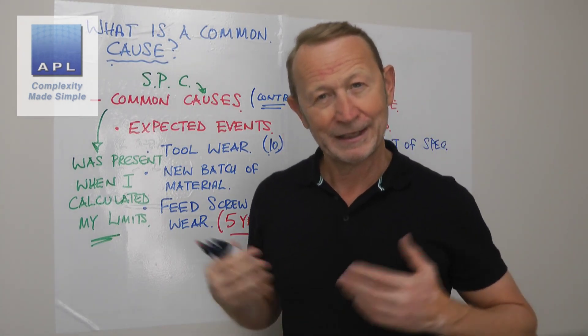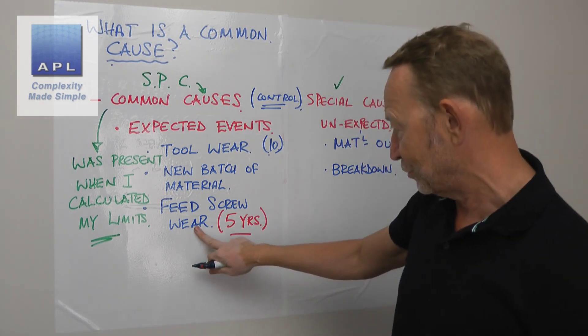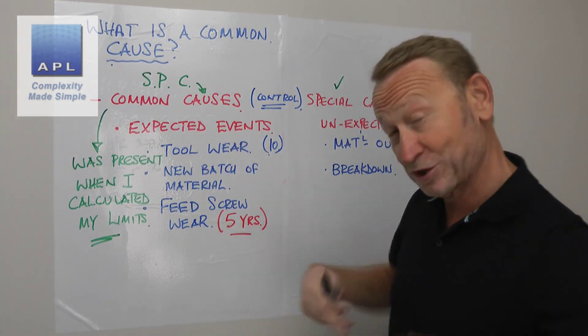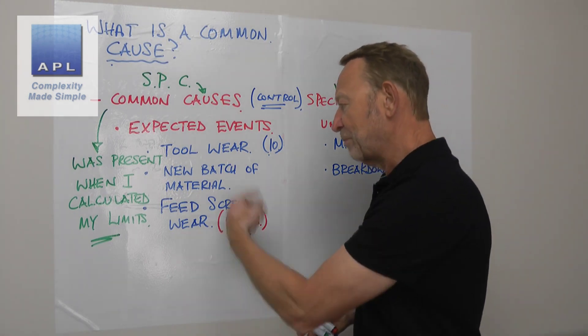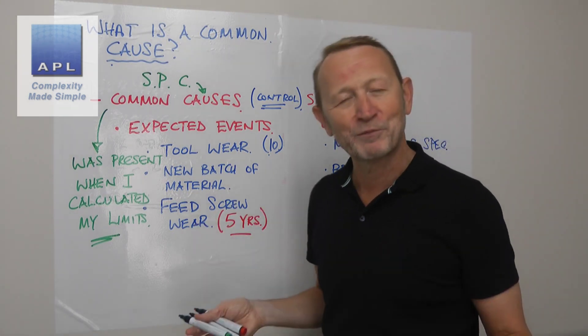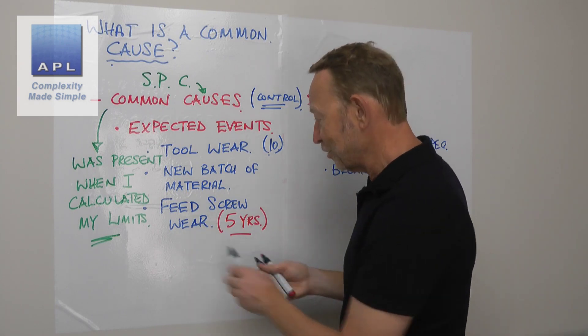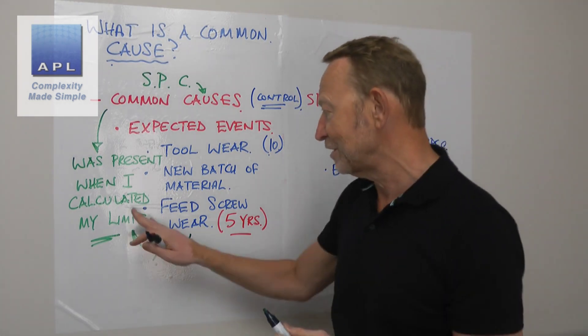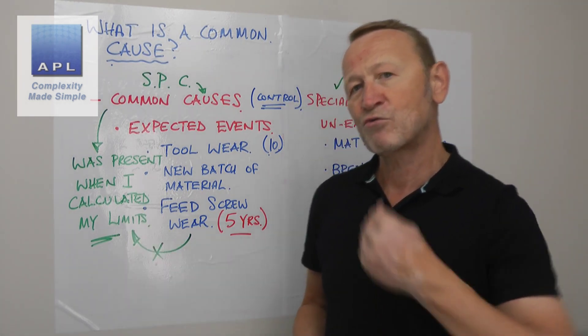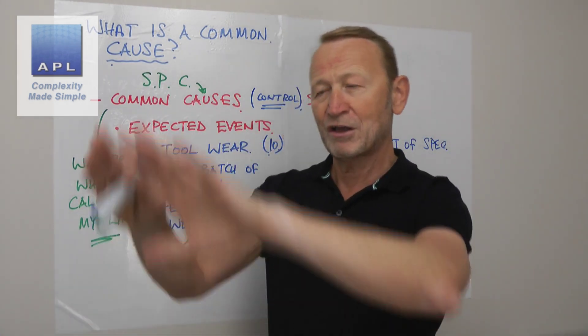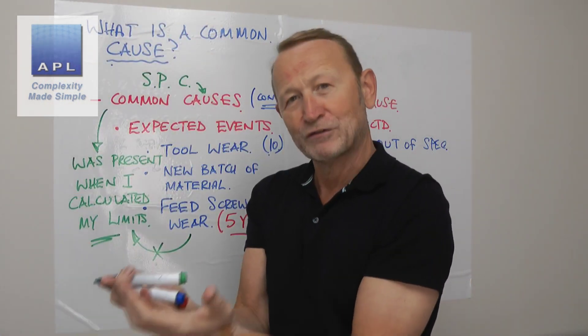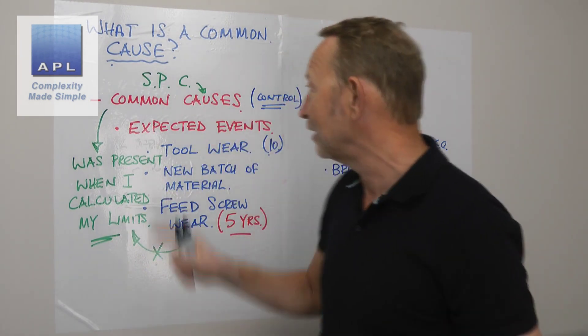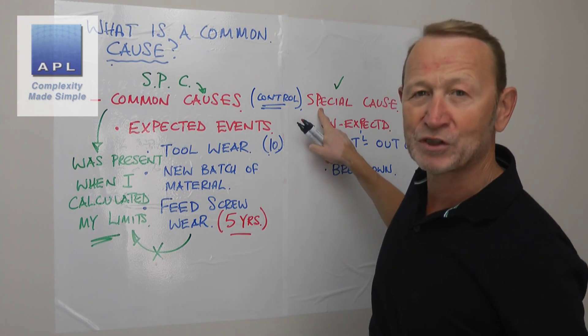So this one for instance here, this is an expected problem, it's an expected event. But because you're not going to wait five years before you put an SPC chart in, of course this problem isn't in this calculation. This variable isn't in the calculation. So really what common events are is what was involved in the calculation, and anything that's outside of the calculation will become a special cause.